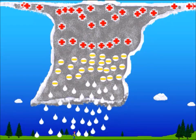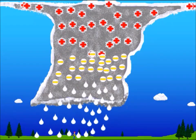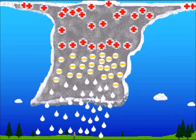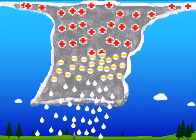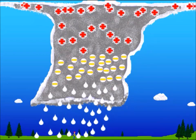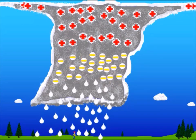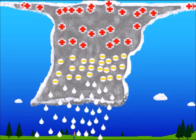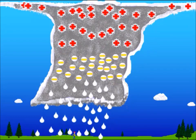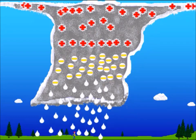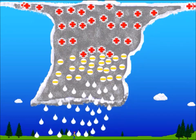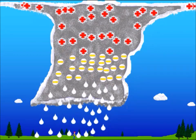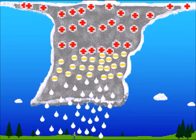The rising air in the thunderstorm cloud causes the lighter ice crystals to be carried upward in the storm, while the heavier snow pellets tend to fall. That leaves the thunderstorm positively charged in the upper parts of the cloud, and negatively charged in the middle and lower parts of the cloud.